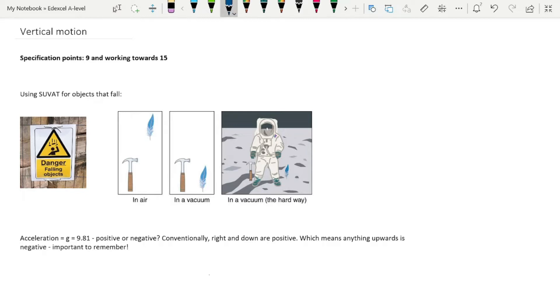Gravitational force has a value of 9.81 meters per second squared, or newtons per kilogram. Is this positive or negative? This is super important. Conventionally, any acceleration that is to the right or down is positive, and because gravitational force is always downwards, g is positive.